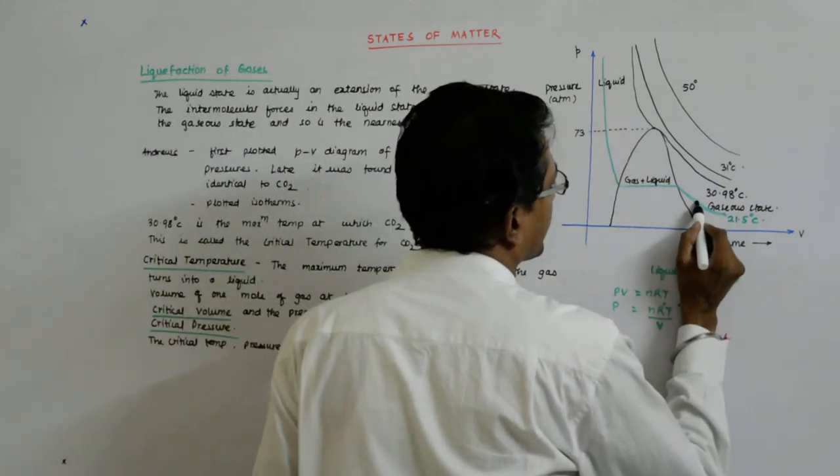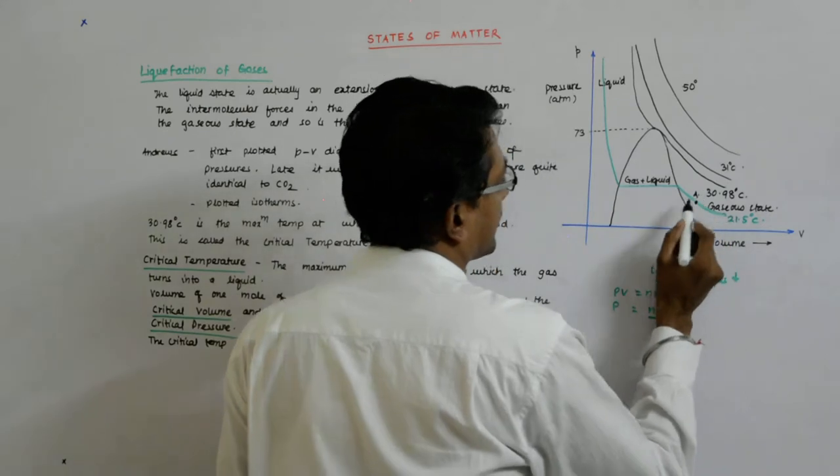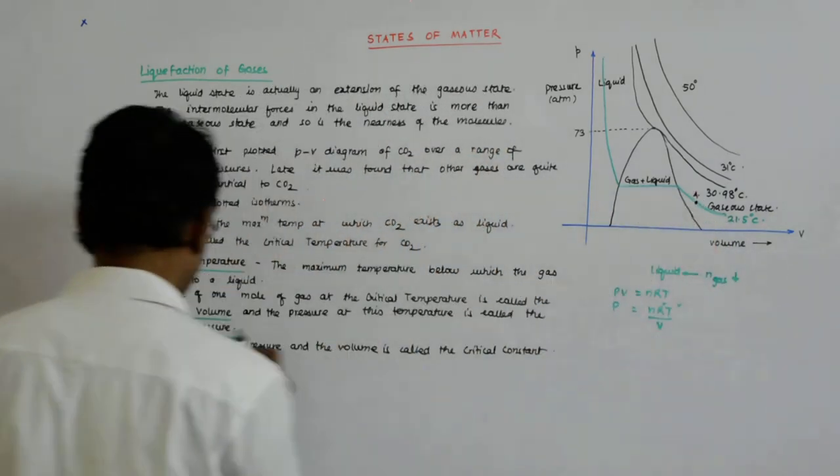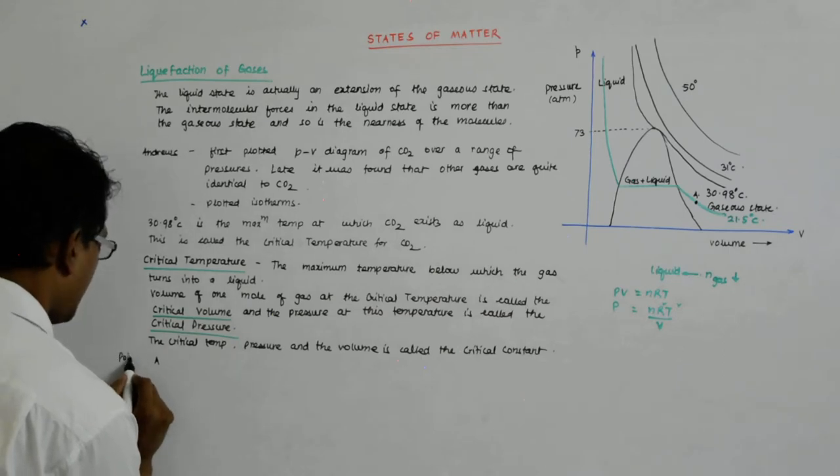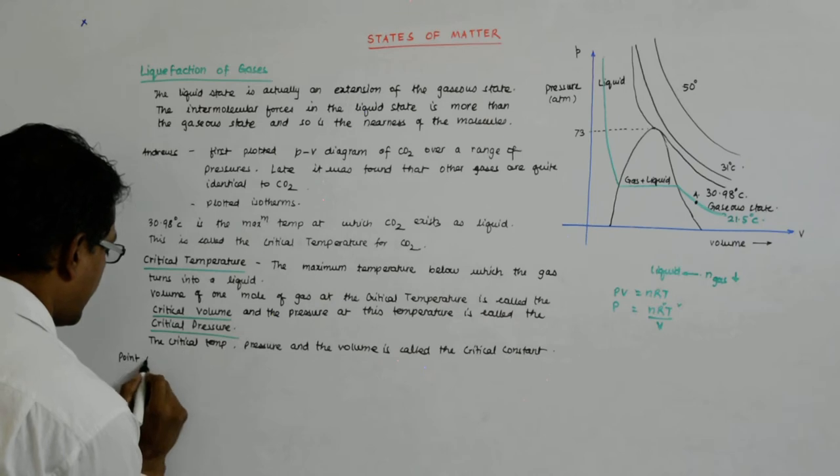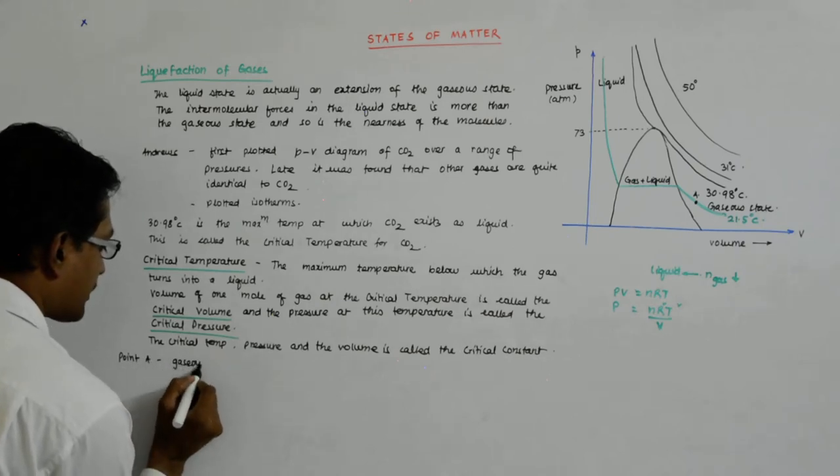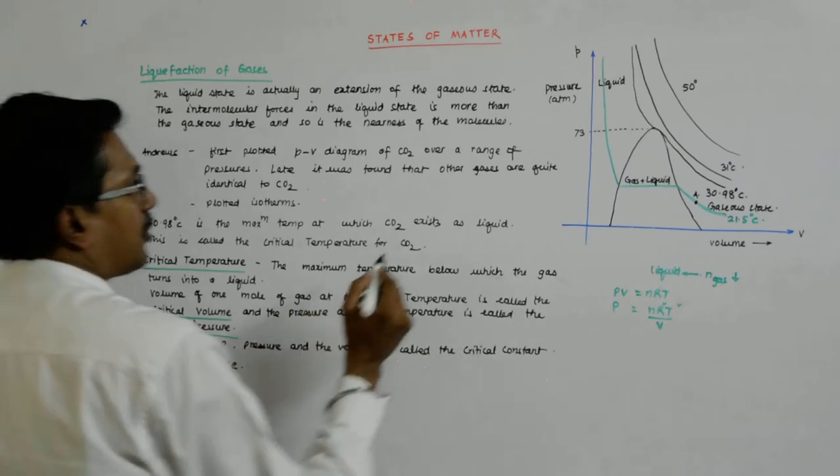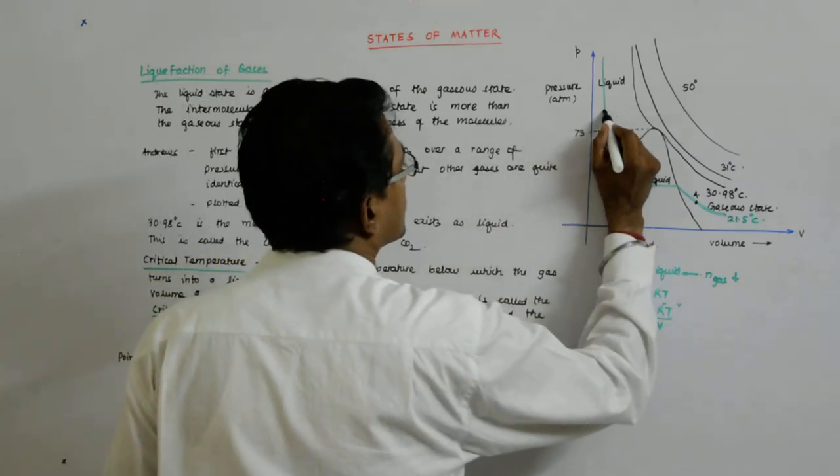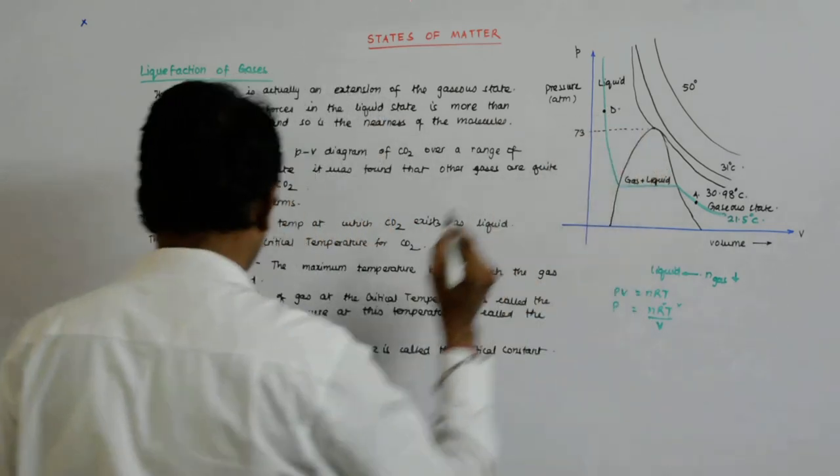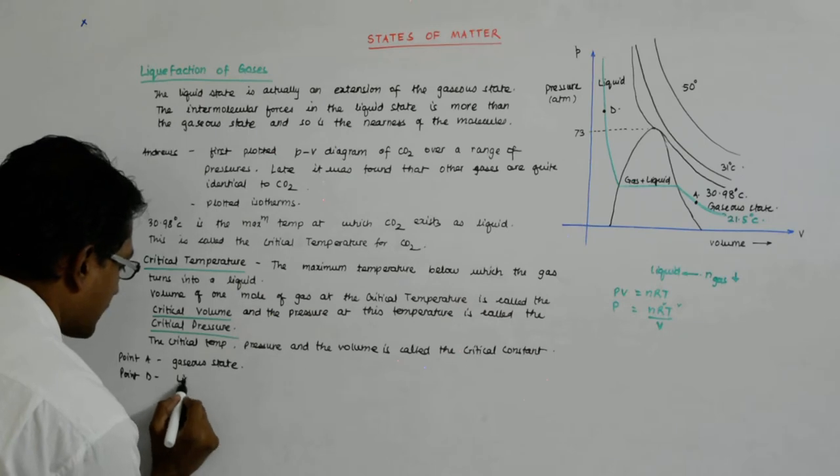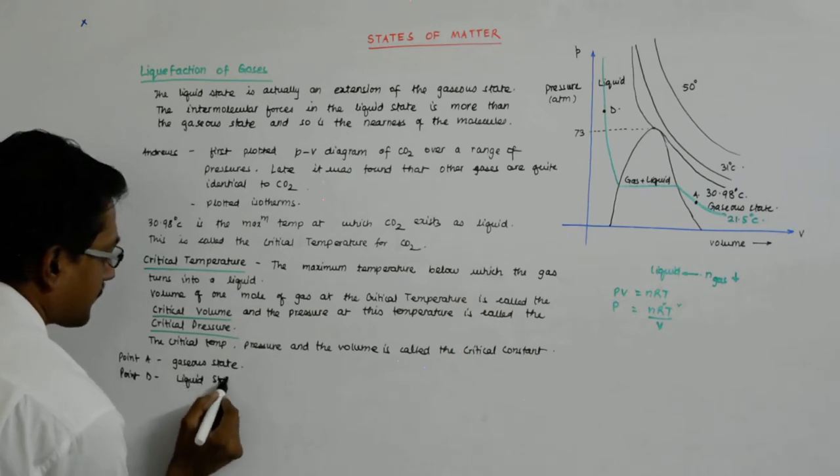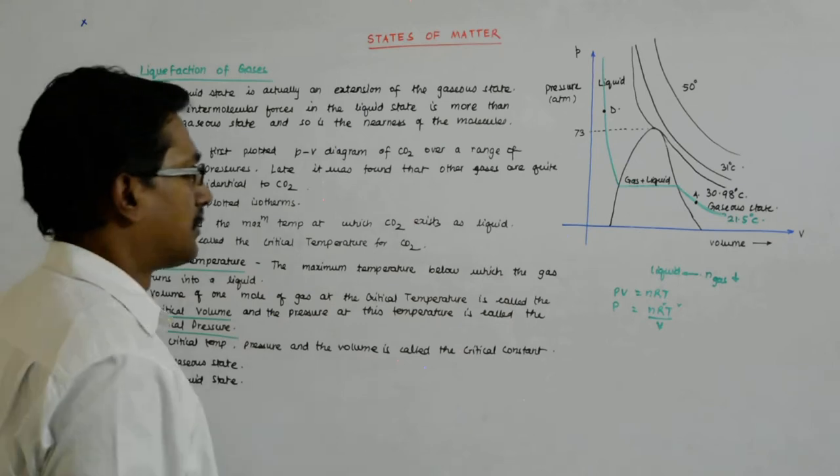Say a point here, point A, is in the gaseous state. Point A represents the gaseous state. Point D is liquid state, completely liquid.